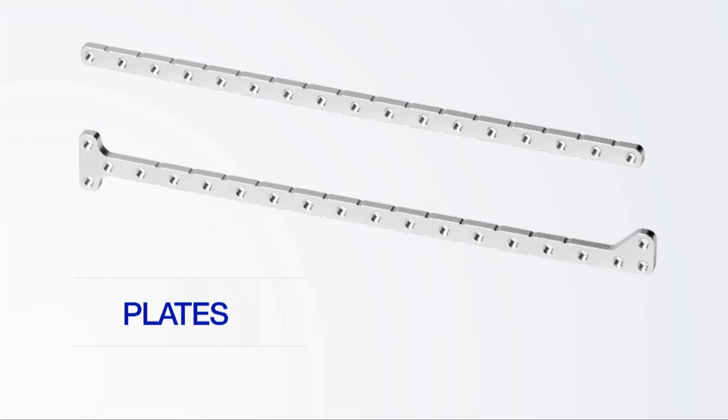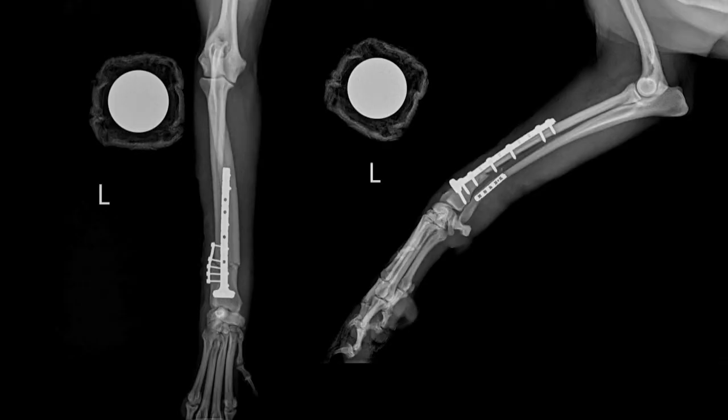Each VetKISS plate size is available in a rigid and an X, or reconstruction plate, option. Rigid plates are considered the go-to plate for everyday use and should be utilized in the majority of VetKISS applications. X-plates should not be used as a solitary plate in load-bearing applications and are only occasionally considered clinically appropriate.